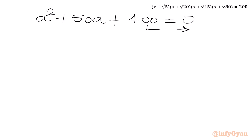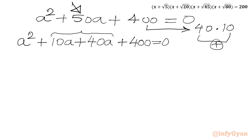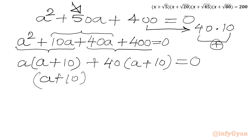The factors of 400 that multiply to 400 and add to 50 are 10 and 40. So we split the middle term: a² + 10a + 40a + 400 = 0. From the first two terms, take a common: a(a + 10) + 40(a + 10) = 0, giving (a + 10)(a + 40) = 0.